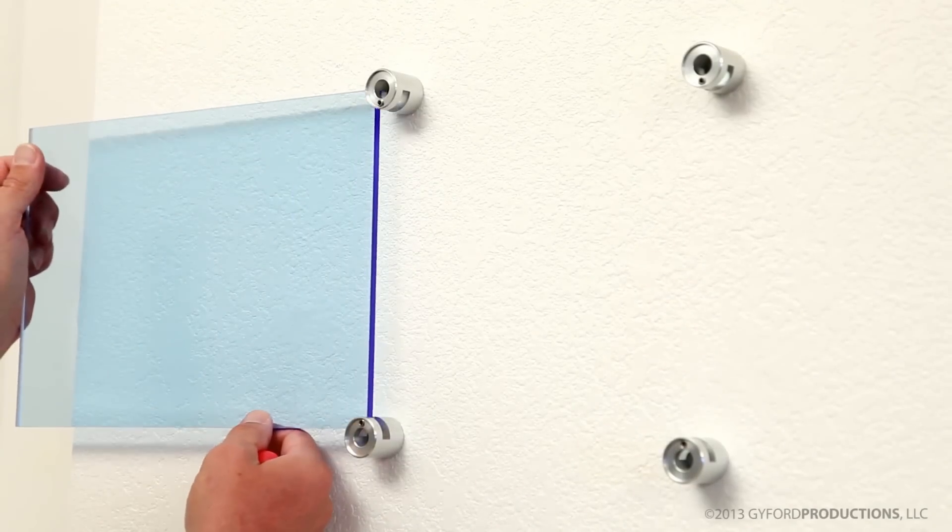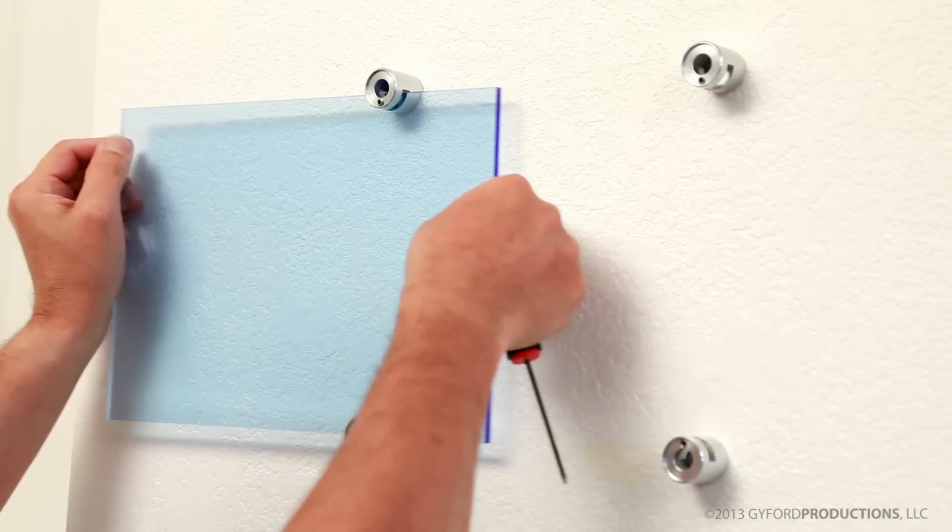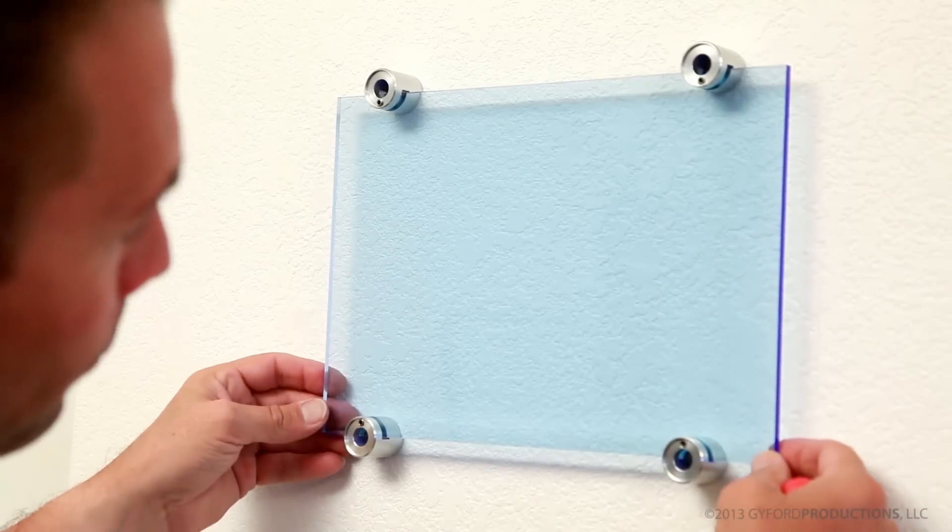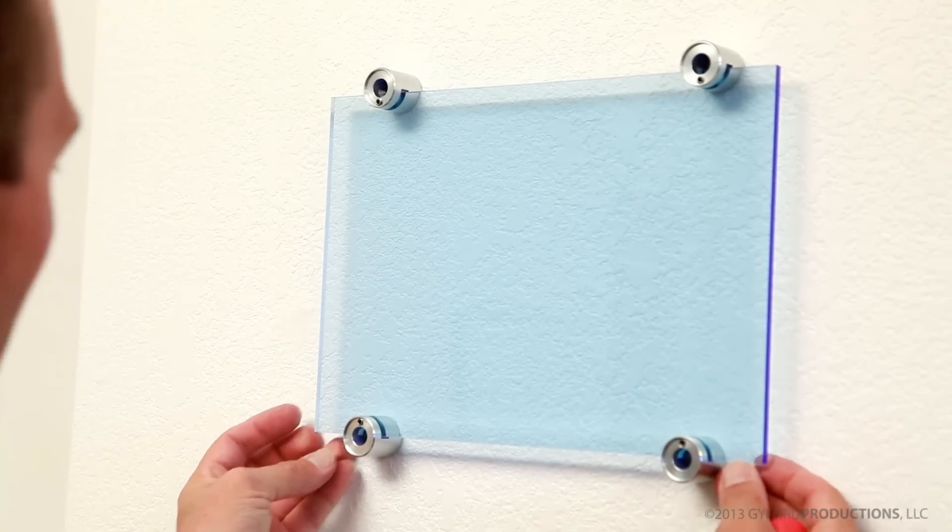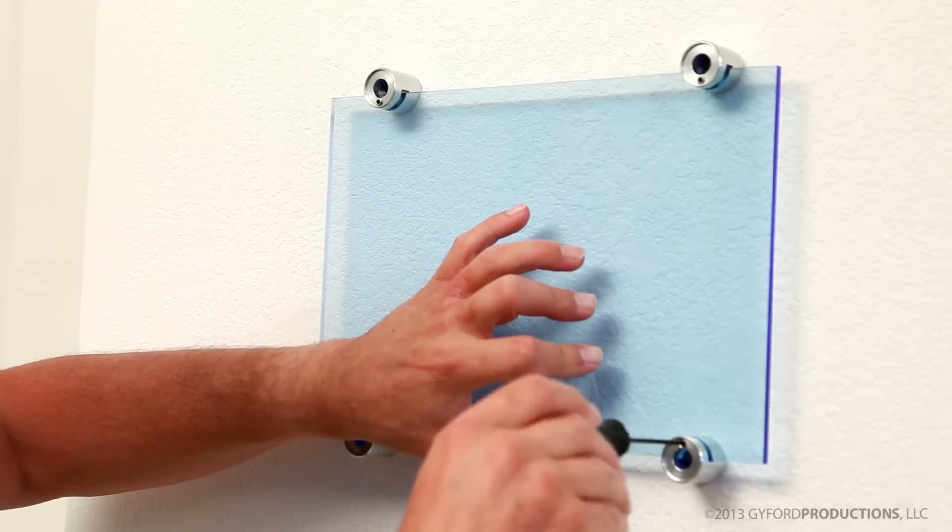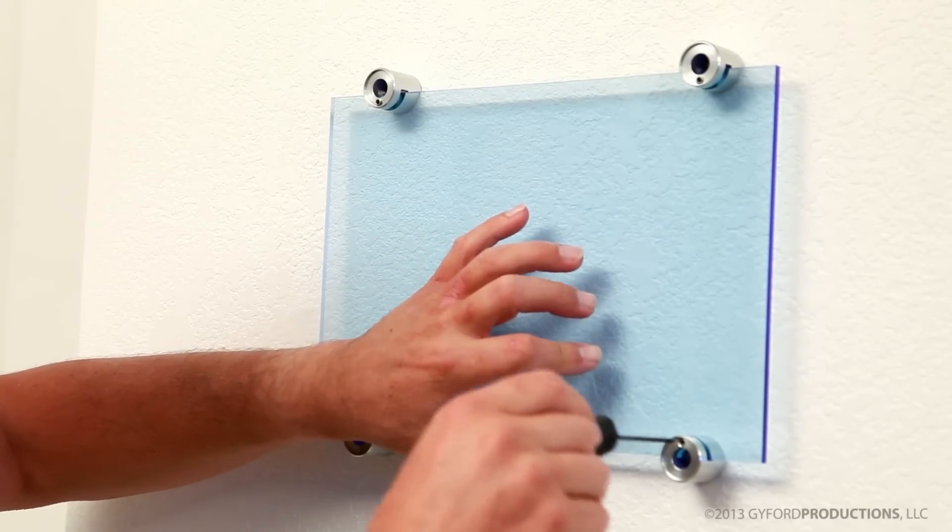Slide your panel into place. You may need to back the set screw out a little. Line everything up. Snugging the lower set screws will allow for any slight adjustments.